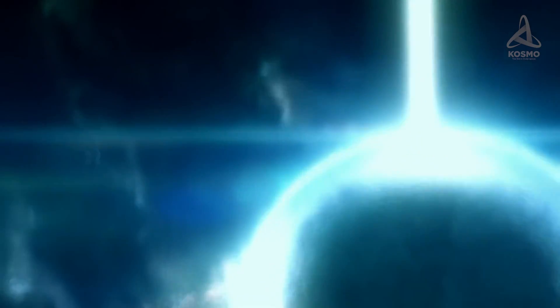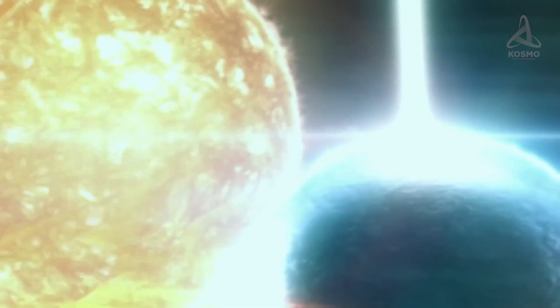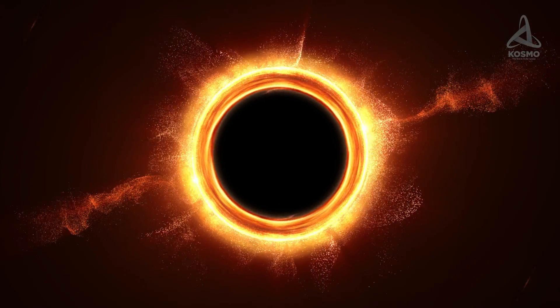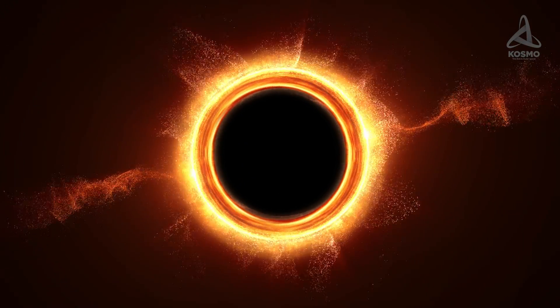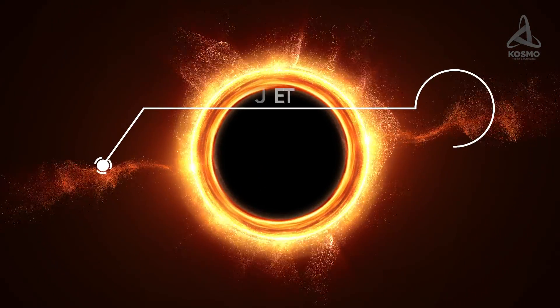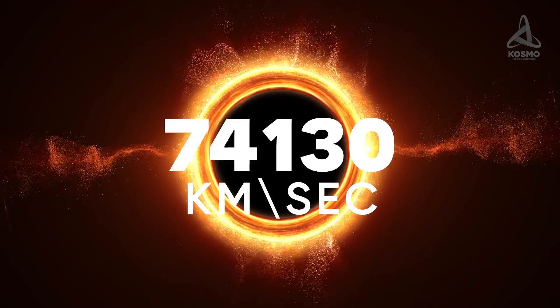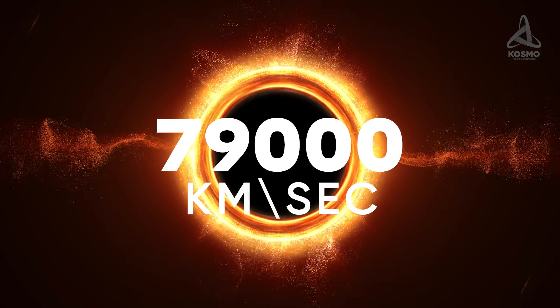As it spirals, the matter heats up to extreme temperatures and emits X-rays. Some part of this matter leaves the system in two jets at the rate of approximately 26% of the speed of light. That is 79,000 km per second.